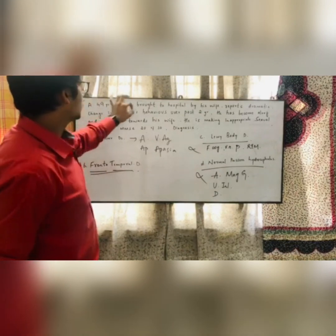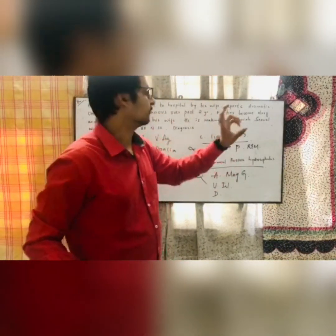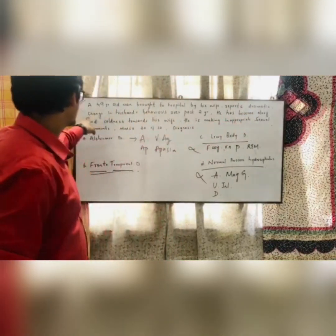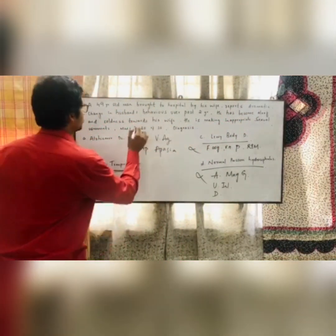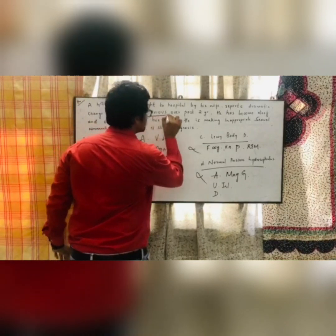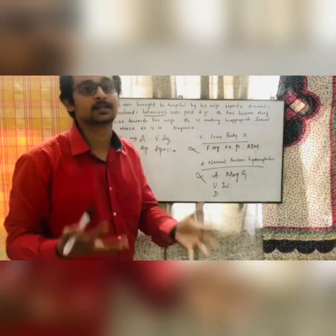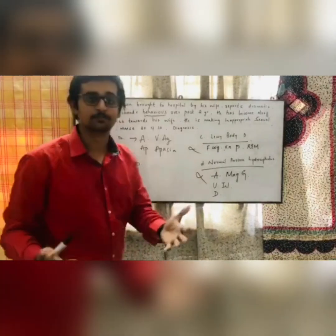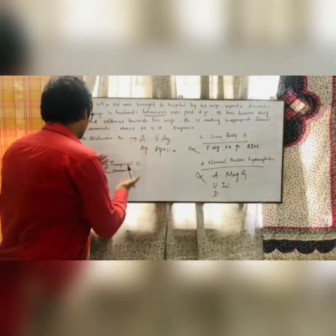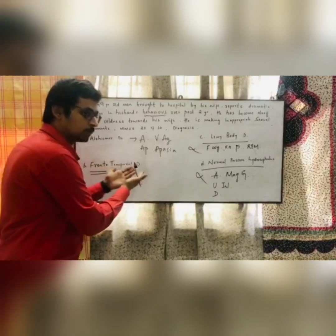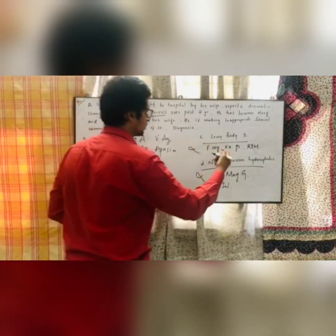Reading the question: a 49-year-old man brought to the hospital reports a dramatic change — note that word, dramatic change — in his behavior over the past few months. Behavioral abnormalities are very important here. Behavioral abnormalities occur in frontal lobe involvement, so Frontotemporal dementia may be the answer.